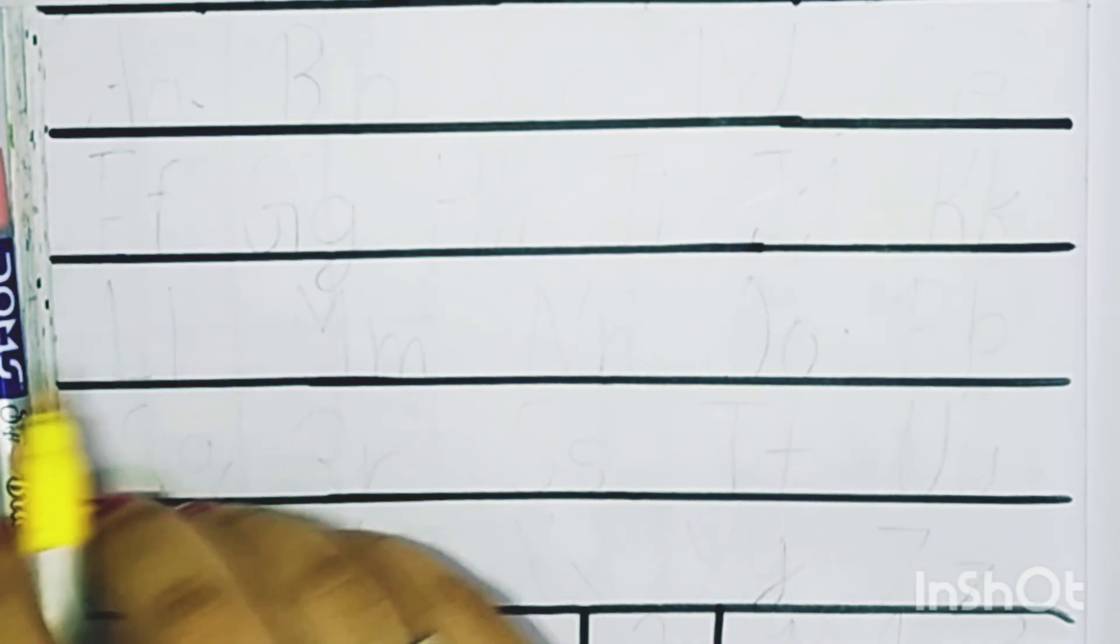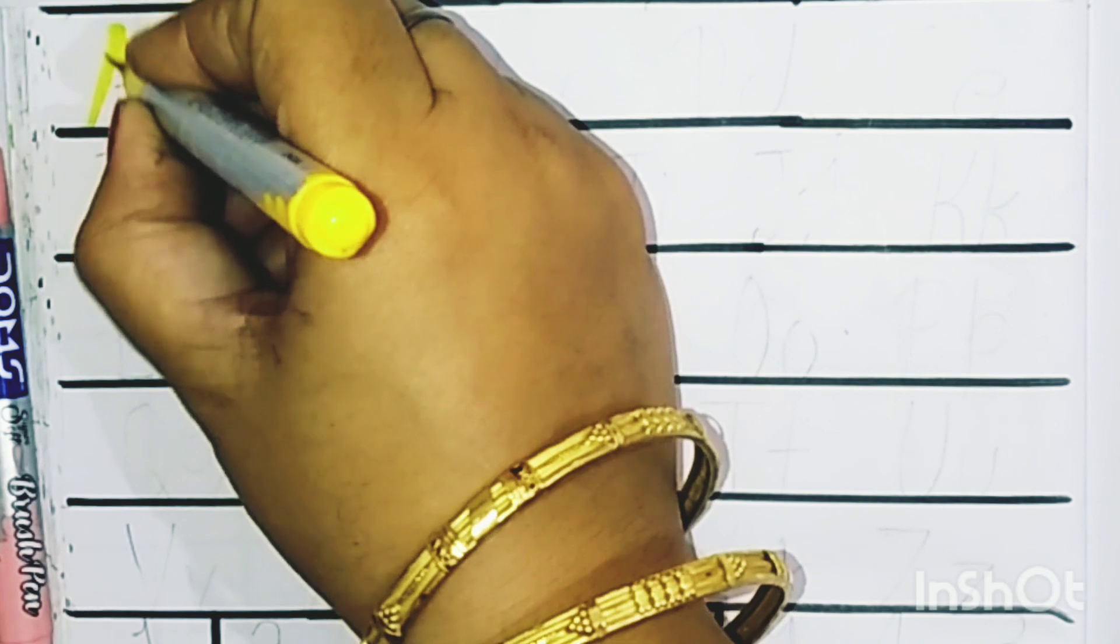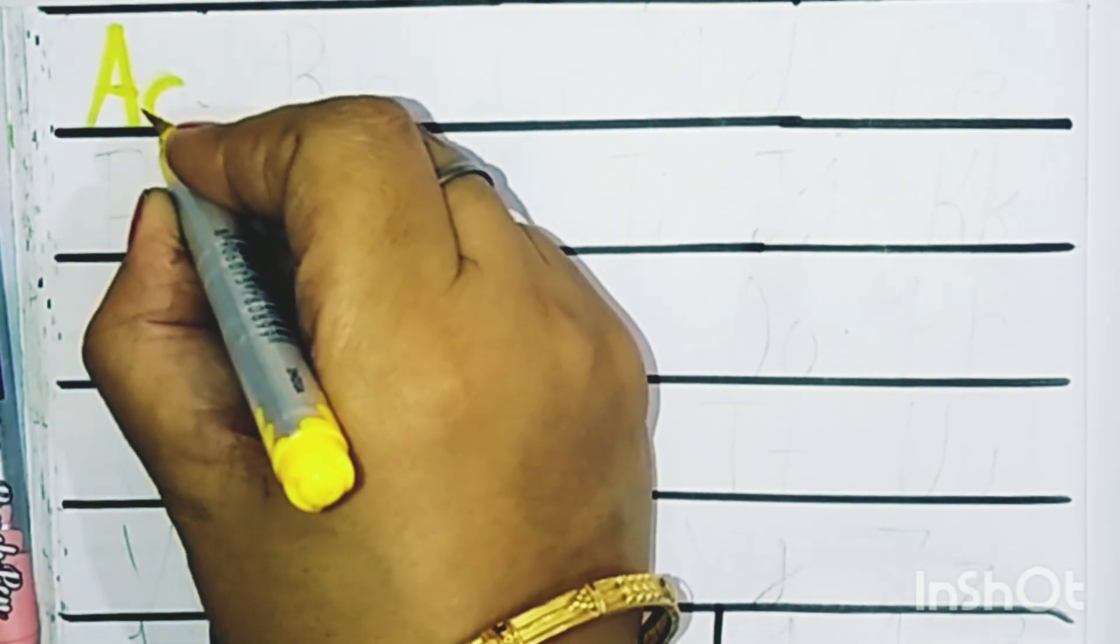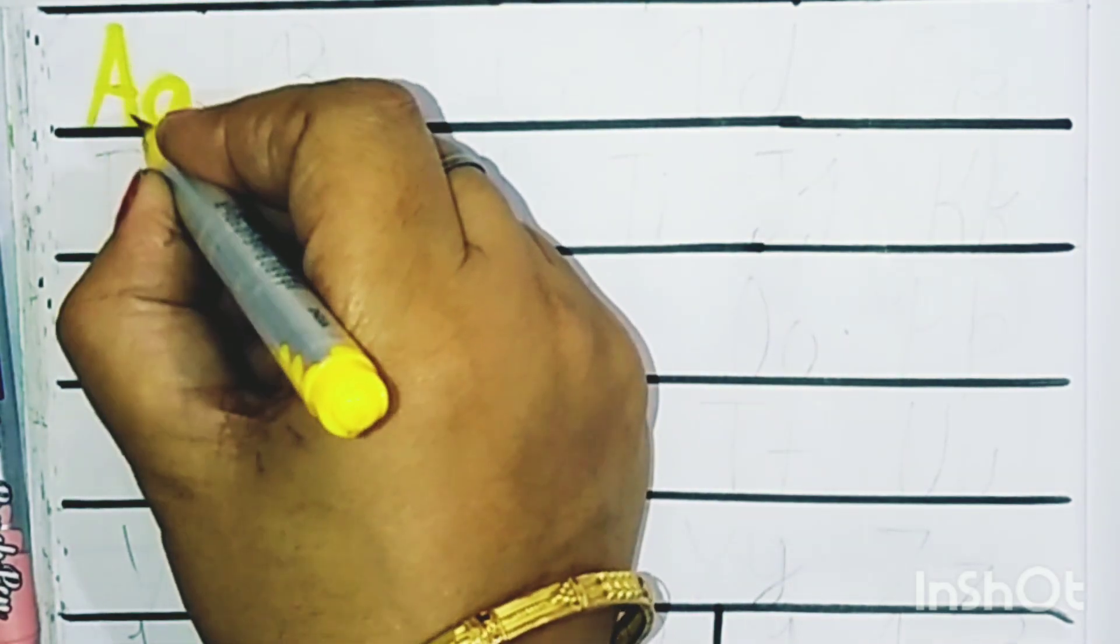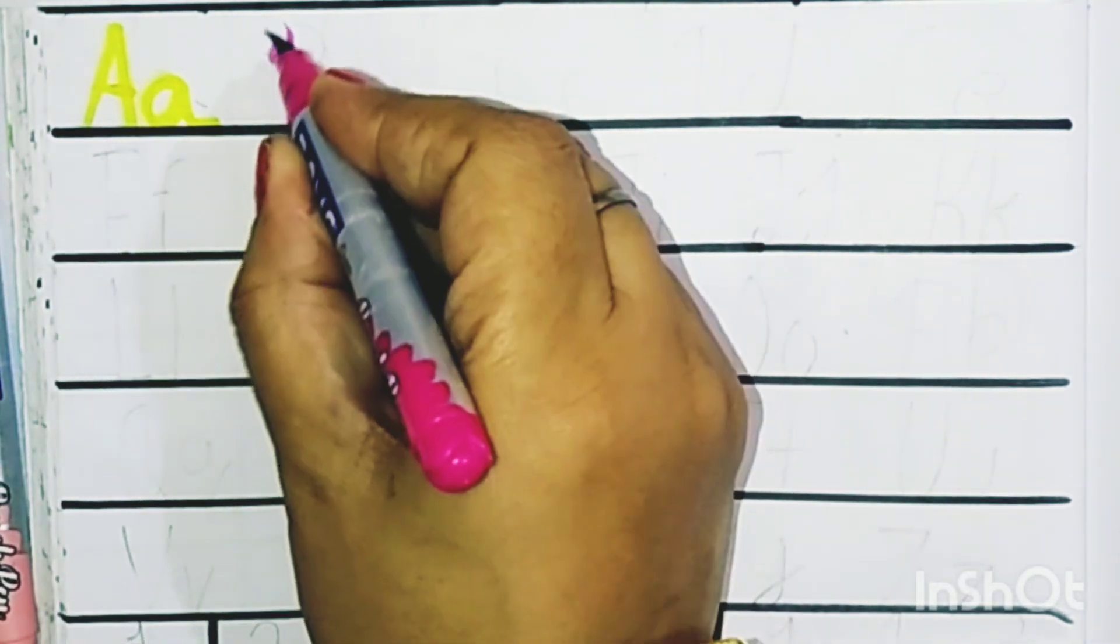Let us restart our alphabets. A for apple. These are capital and small alphabets. A for apple, B for ball.